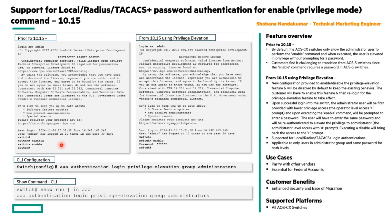From the 10.15 release, we have introduced support for local RADIUS and TACACS+ password authentication for the enable command. This is the new CLI: 'aaa authentication login privilege-elevation group administrator'. It is disabled by default to preserve the current behavior. For privilege elevation to work, the user must first enable the new CLI and then log back in.